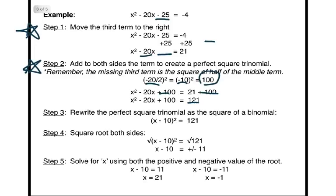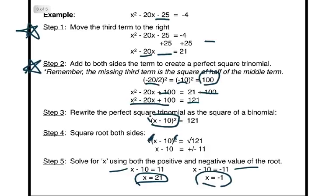Now we rewrite the perfect square trinomial on the left as the square of the binomial, x minus 10 squared, equals 121. This is a simple equation that we can solve using the square root property. So we square root both sides, the square root and the square cancel on the left, leaving us with x minus 10 equals plus or minus 11. We solve for x using both the positive and the negative value: x minus 10 equals positive 11, x minus 10 equals negative 11. We add 10 to both sides, and we get x equals 21 and x equals negative 1.